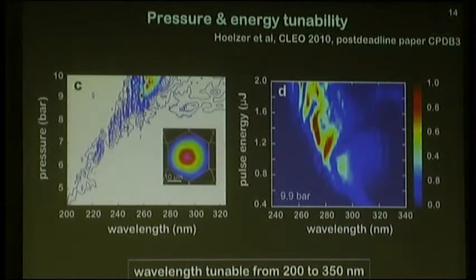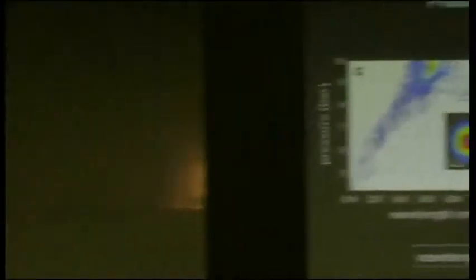So we have a system where we have wavelength tunable deep ultraviolet light from around 200 nanometers to 350 nanometers.